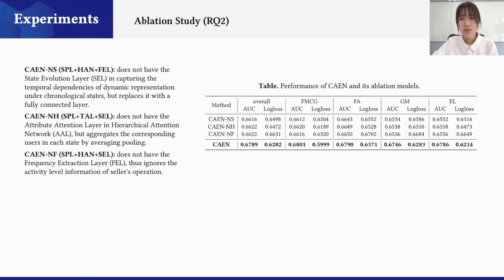In the ablation study, we found that no matter which layer we remove from CAEN, the performance loss is significant. It's also worth noting that the frequency extraction layer works like a supervisor of seller operation, which captures the seller's operational activities on attribute modification, is also proved to be effective, especially on the log-loss metric.